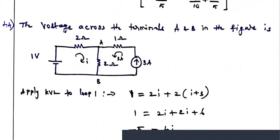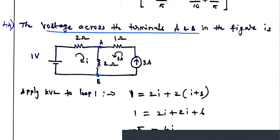The first question: find the voltage across terminals A and B in the figure. In this diagram, this is point A and this is point B. Across terminal A and B there is a 2-ohm resistor connected, and there is one more 2-ohm resistor and a 1-ohm resistor with a 1-volt battery supply and a 3-amp current source. We may use any analysis to find the voltage across A and B. We are going to solve this using KVL.